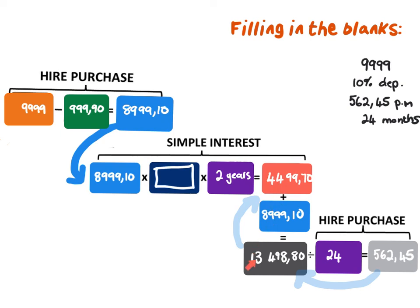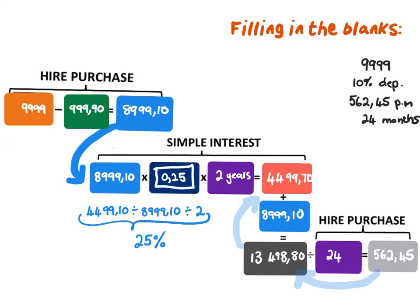Always check your answer — confirm that adding the two values gives 13,498 Rand and 80 cents. Like in the previous example, when working backwards to find the interest percentage, I divide my interest amount by my principal amount (which is also the loan amount) and then by the number of years. This gives a value of 0.25 — don't forget to write that as a percentage, so 0.25 is 25%. Once again, working it out in the blocks will really guide you towards the answer quickly. Fill in what you have and find the missing blocks in the setup.